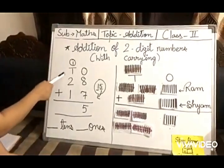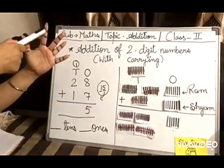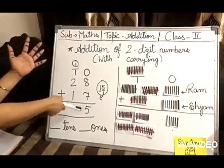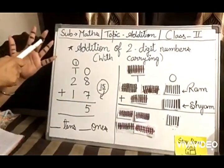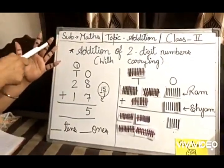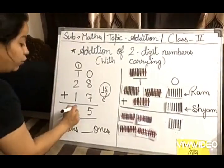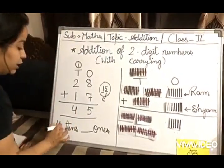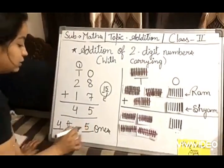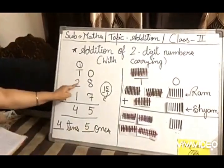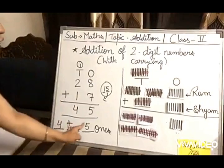Now we have to count these 3 digits all together. First, 1 plus 2: 1, 2, 3. And plus 1, so 1 more: 1, 2, 3, 4. So the total is 4. 4 will be here - 4 tens and 5 ones. So our answer of 28 plus 17 is 45.